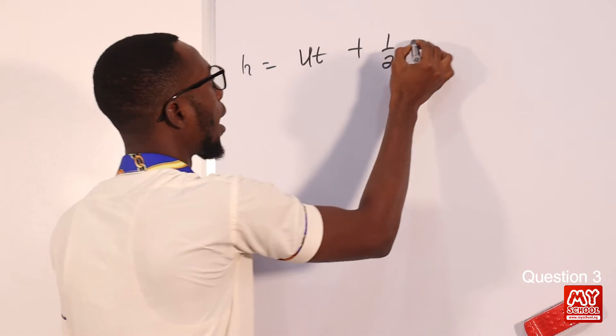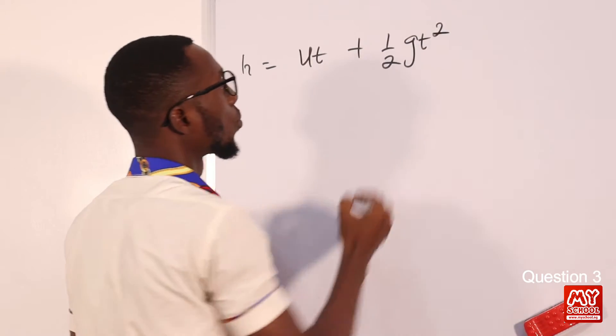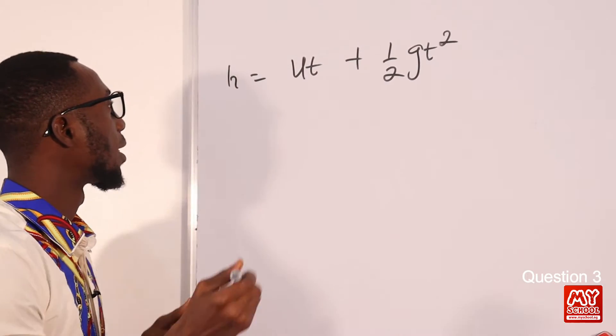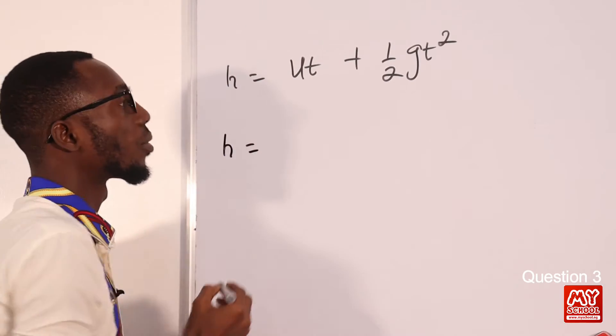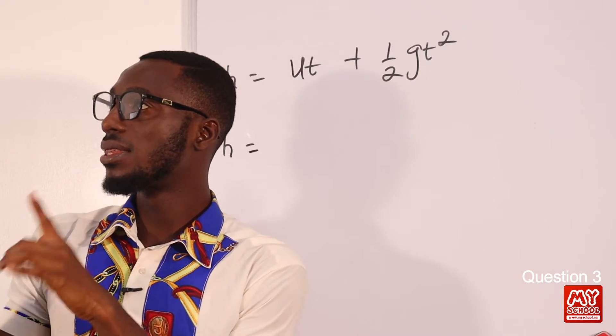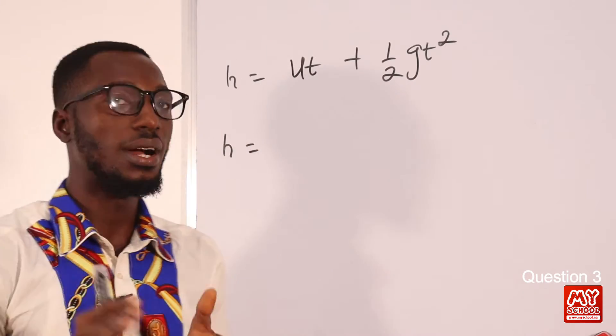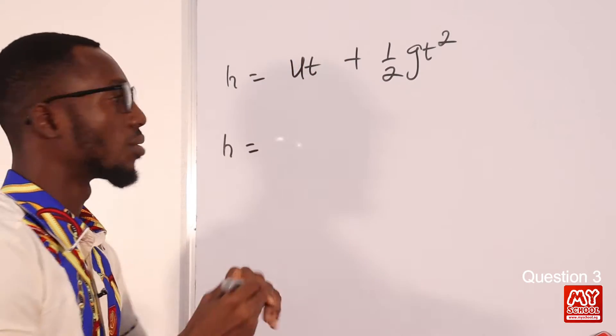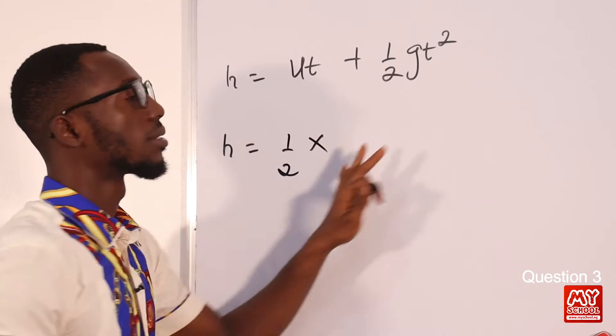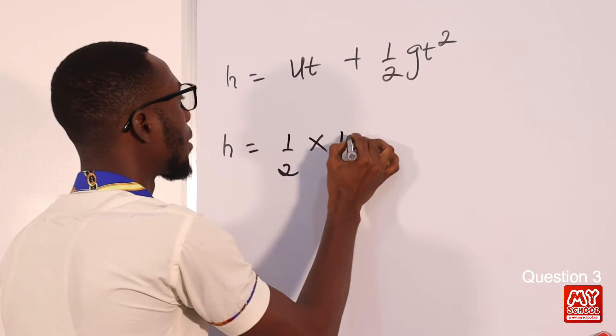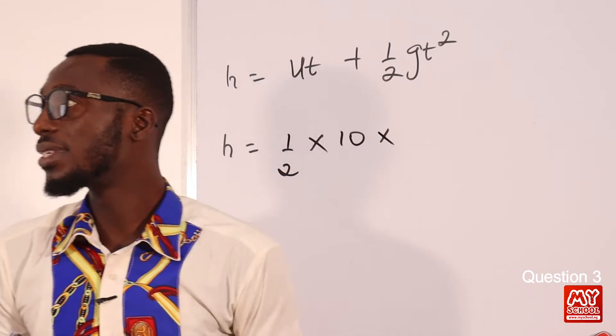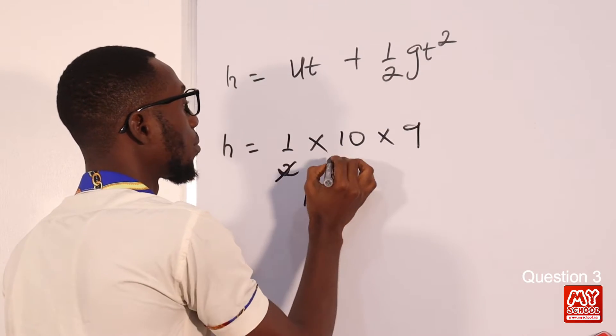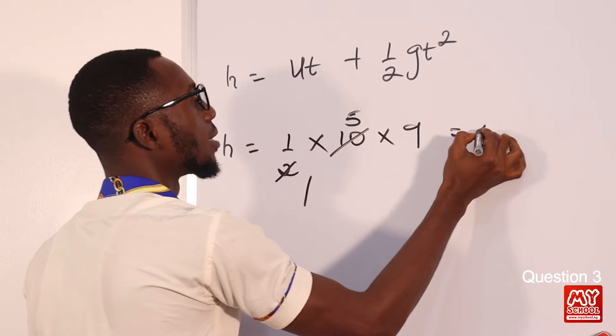So we are asked to find what is the distance covered by the object. So we have H equals, remember we are told if it takes an object 3 seconds to fall freely to the ground. So initial velocity that is 0. So this is gone, 0 times T this is gone. So what we have left is half times acceleration due to gravity, that is 10, times the time, the time is 3. So 3 raised to power 2, that is 9. So 5 times 9, that is 45.